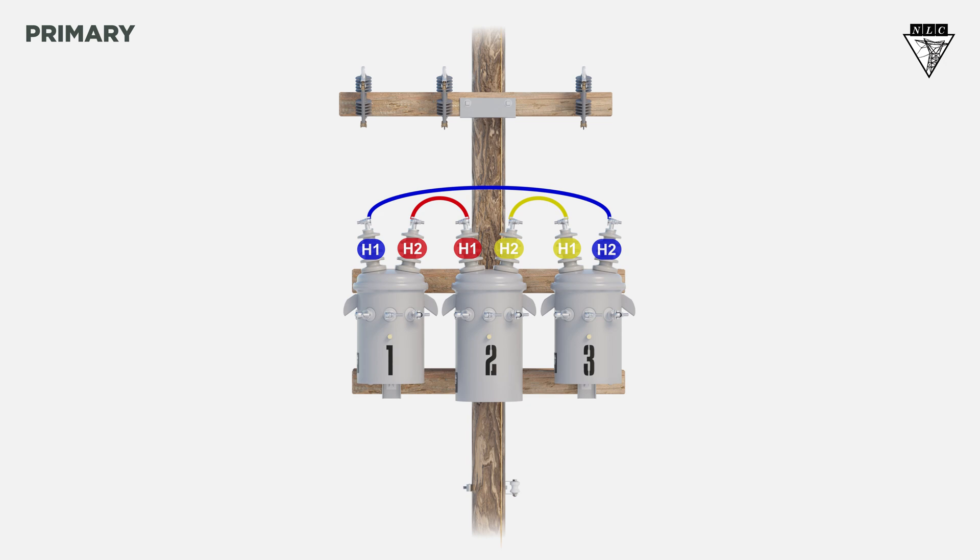Then, run jumpers from each H2 bushing up to a phase. These connections create a delta configuration on the primary side.